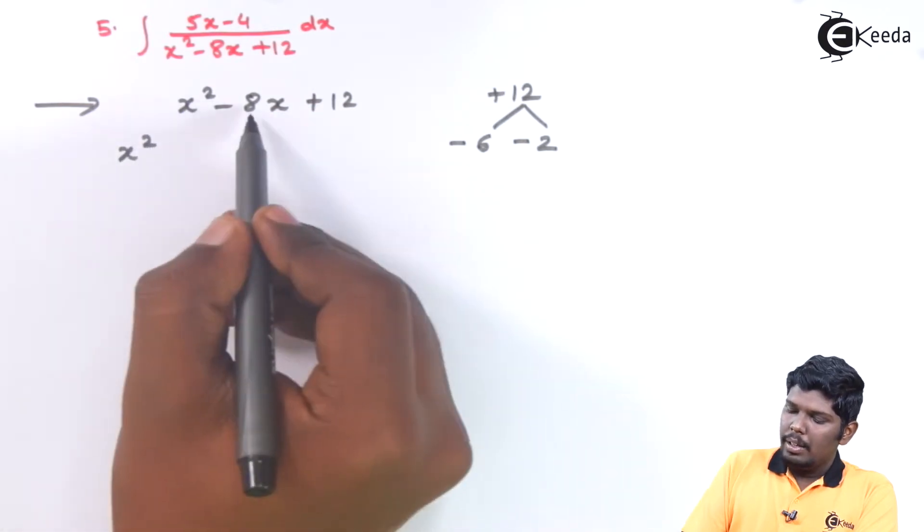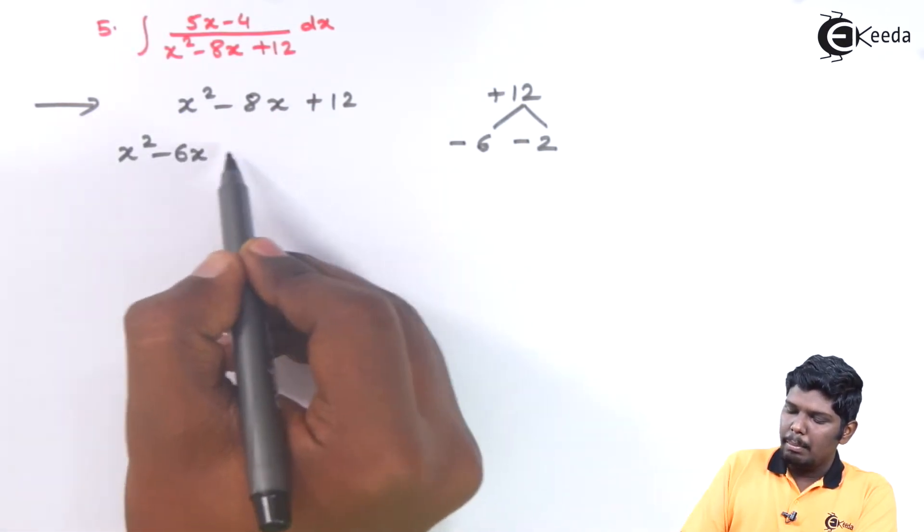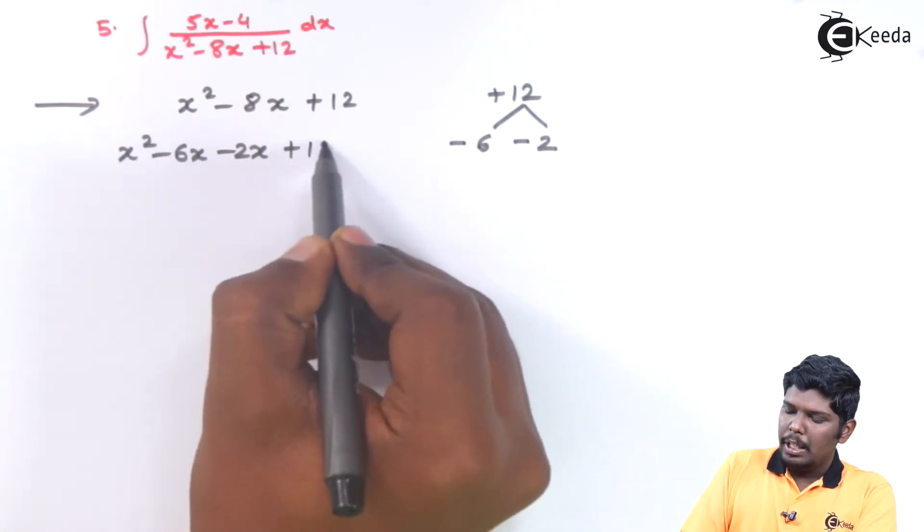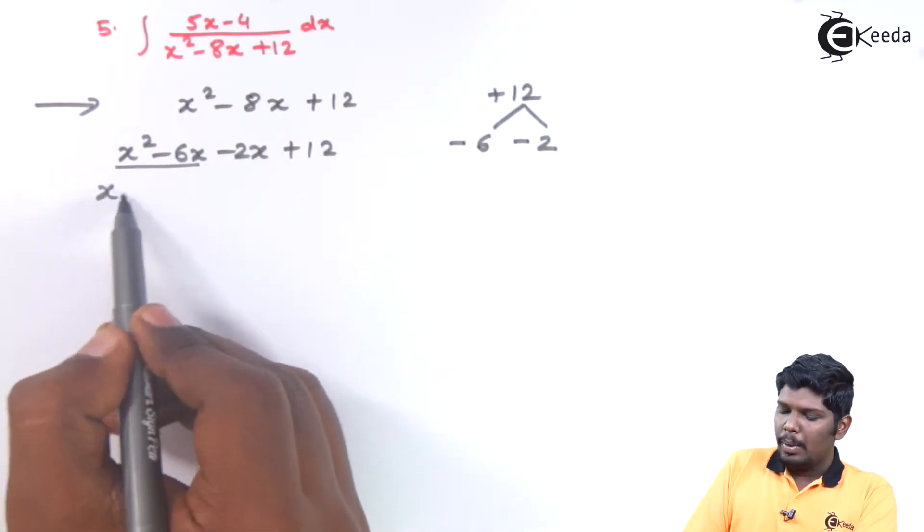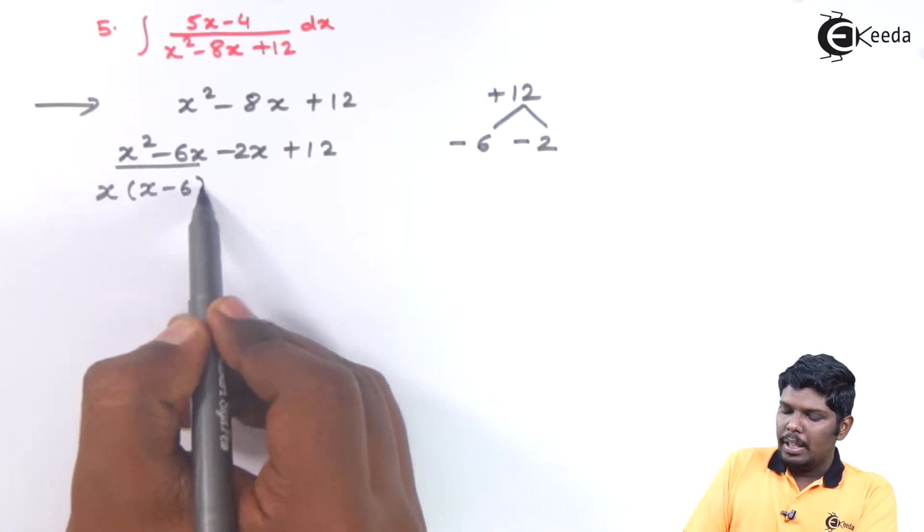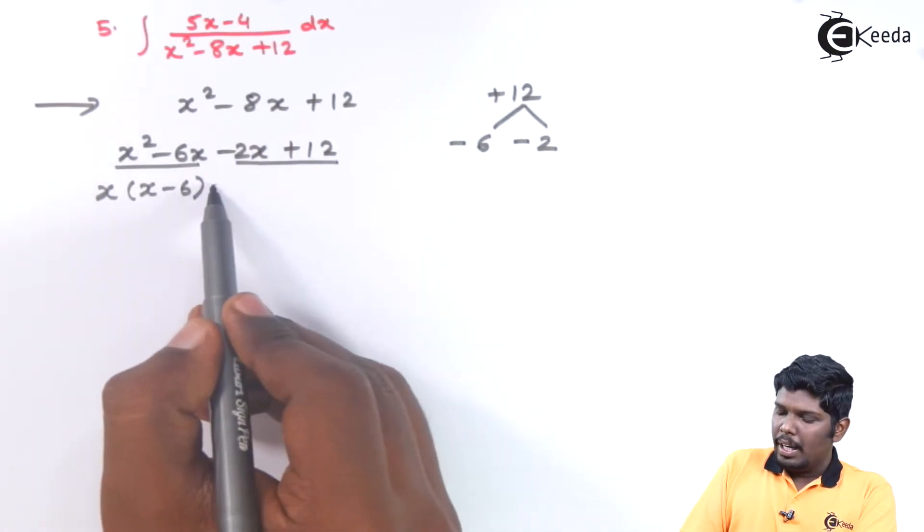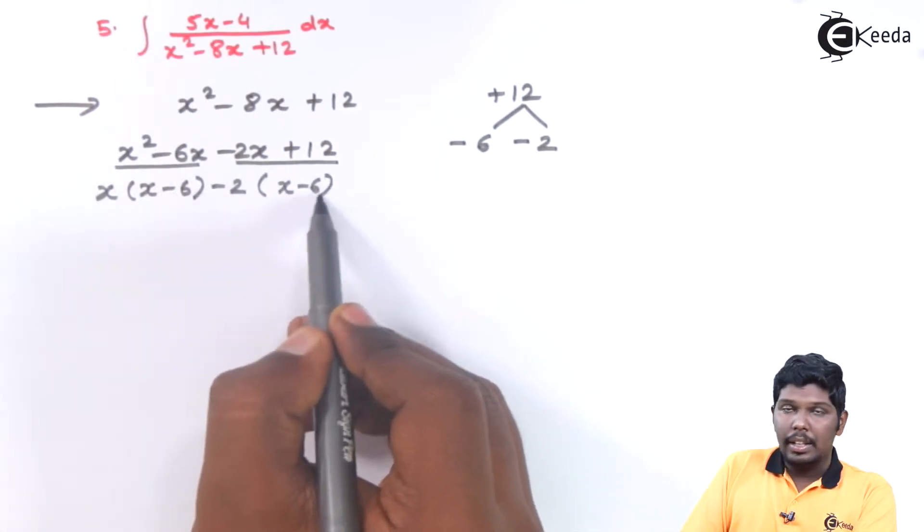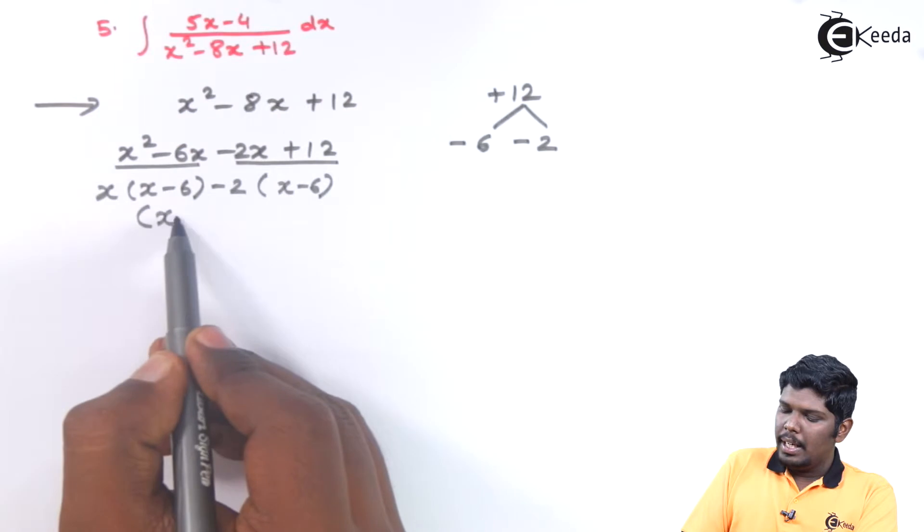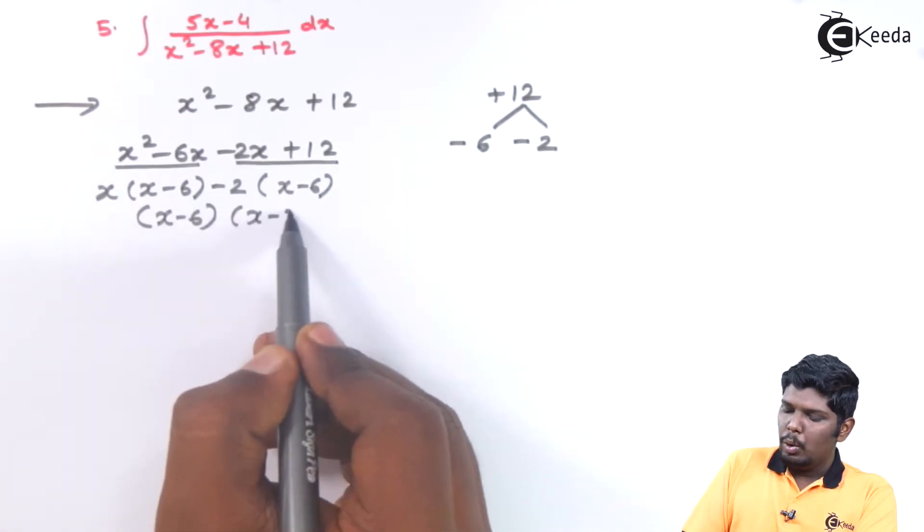Therefore x square minus 8x can be written as minus 6x minus 2x plus 12. From the first two terms we can take x common, remaining we have x minus 6. And from the second two terms we can take minus 2 common, and copying the same bracket we have x minus 6. Therefore this can be written as x minus 6 into x minus 2.